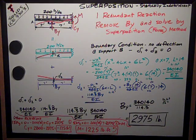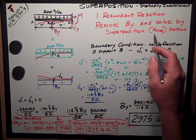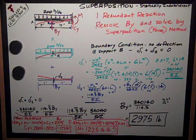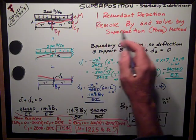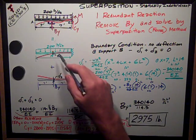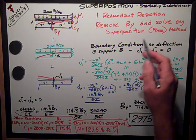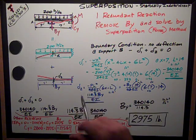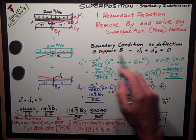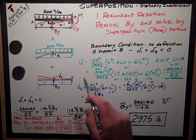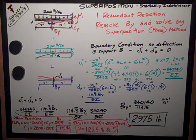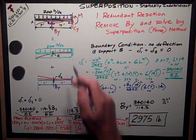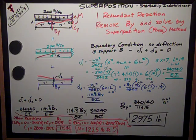So I have to use superposition, also called the force method, to solve it. And the way I do it is by removing the reaction at BY and superimposing those two situations and using a boundary condition to give me another equation that enables me to solve for that unknown reaction.